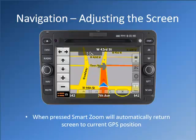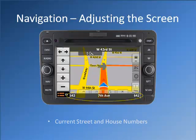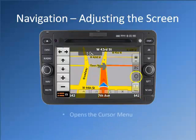When pressed, Smart Zoom will automatically return the screen to the current GPS position. Current street and house numbers. Opens the cursor menu.